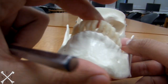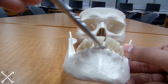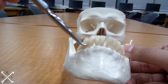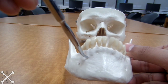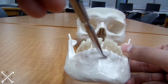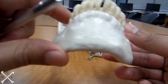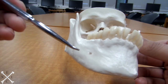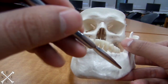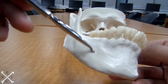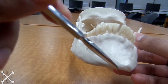Next is the alveolar process, which is right underneath the teeth area — all of that is your alveolar process. Next is the mental foramen, which is these two little holes right there, and finally is your mental protuberance.